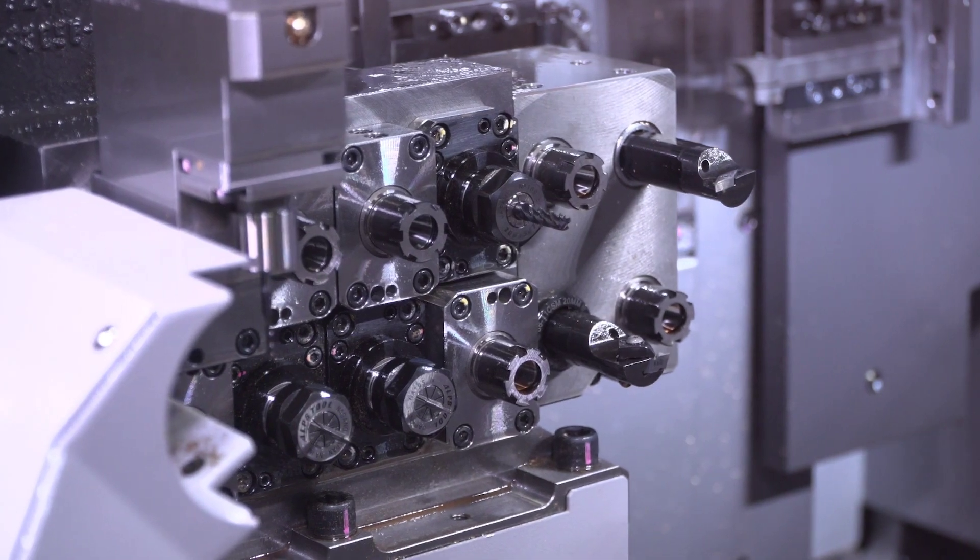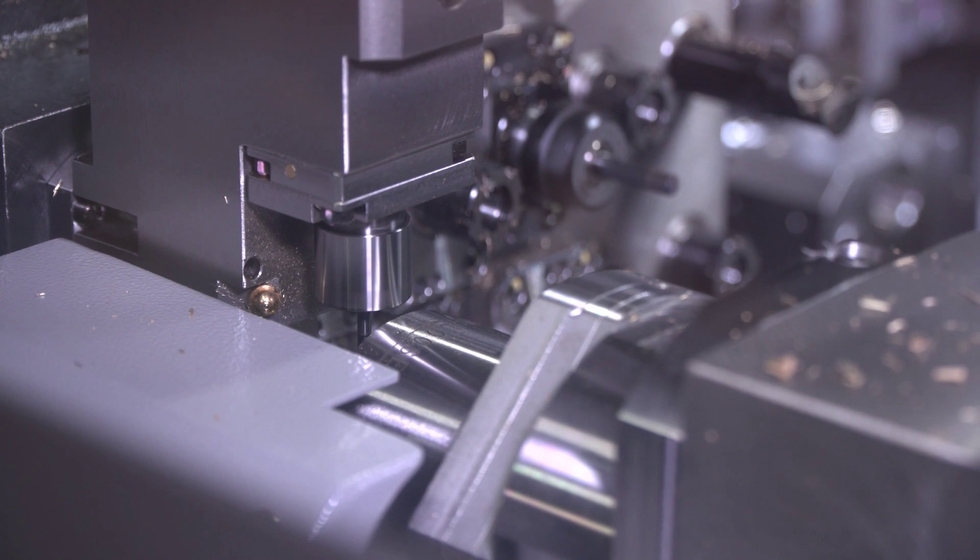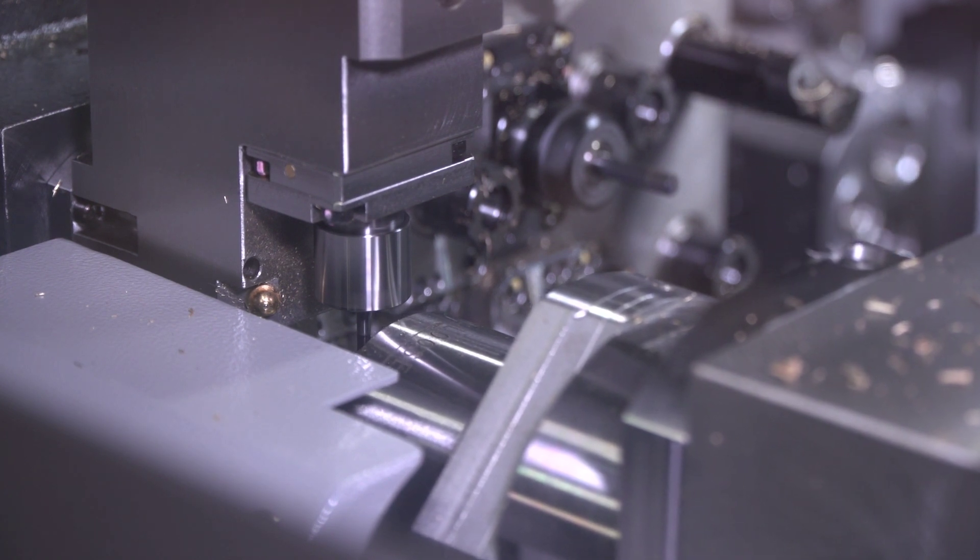A nice feature on the S206 Mark II is the long drill blocks that are on the back side of the sub spindle. It will allow you to do gun drilling on this machine.